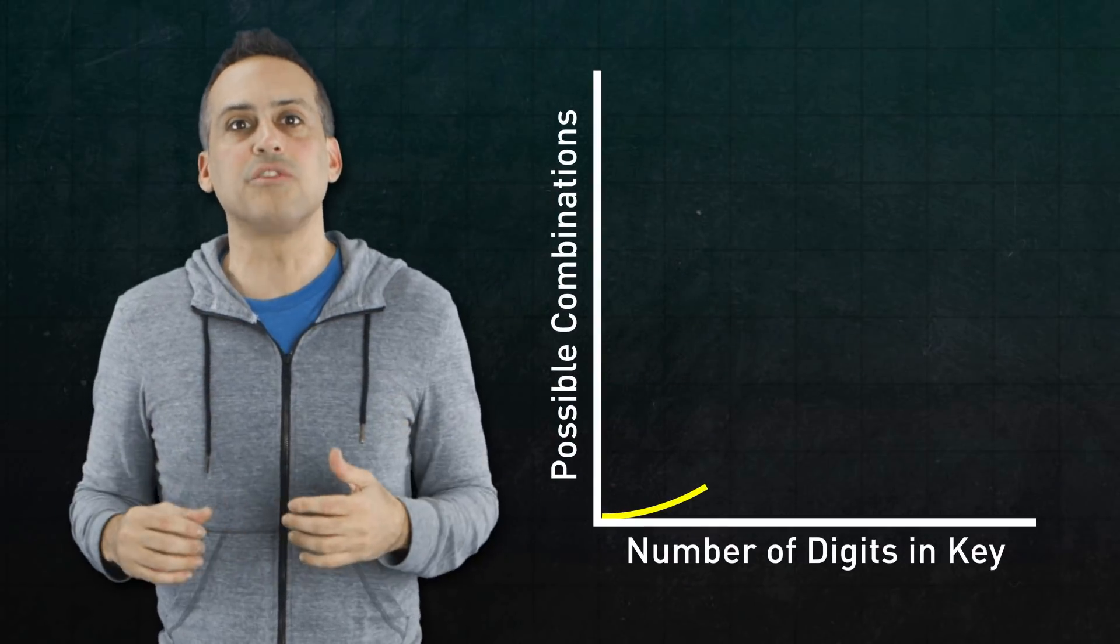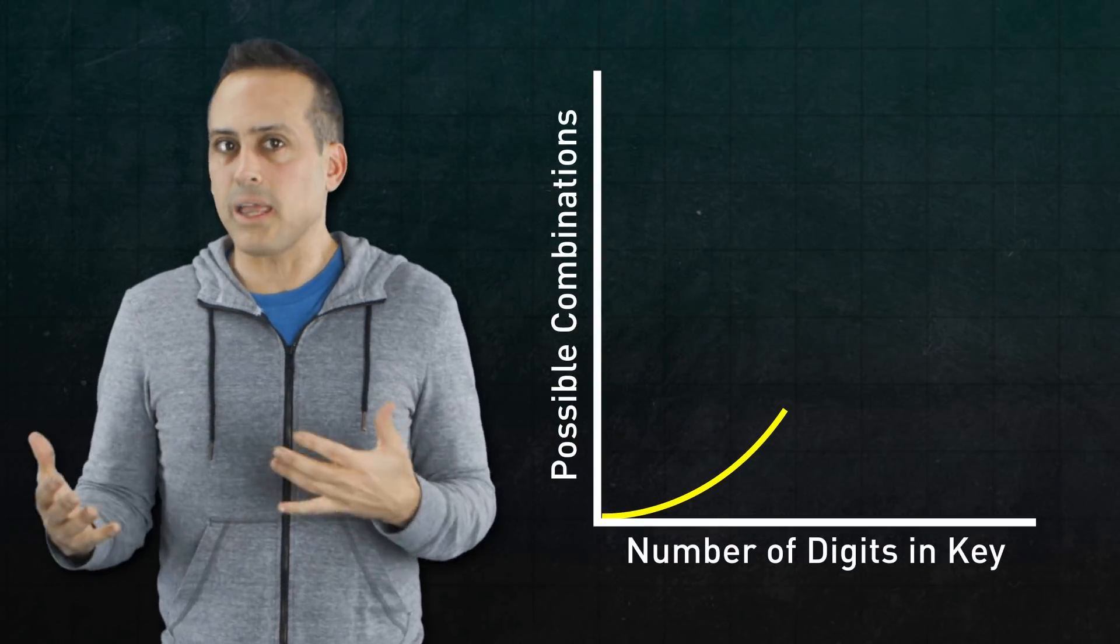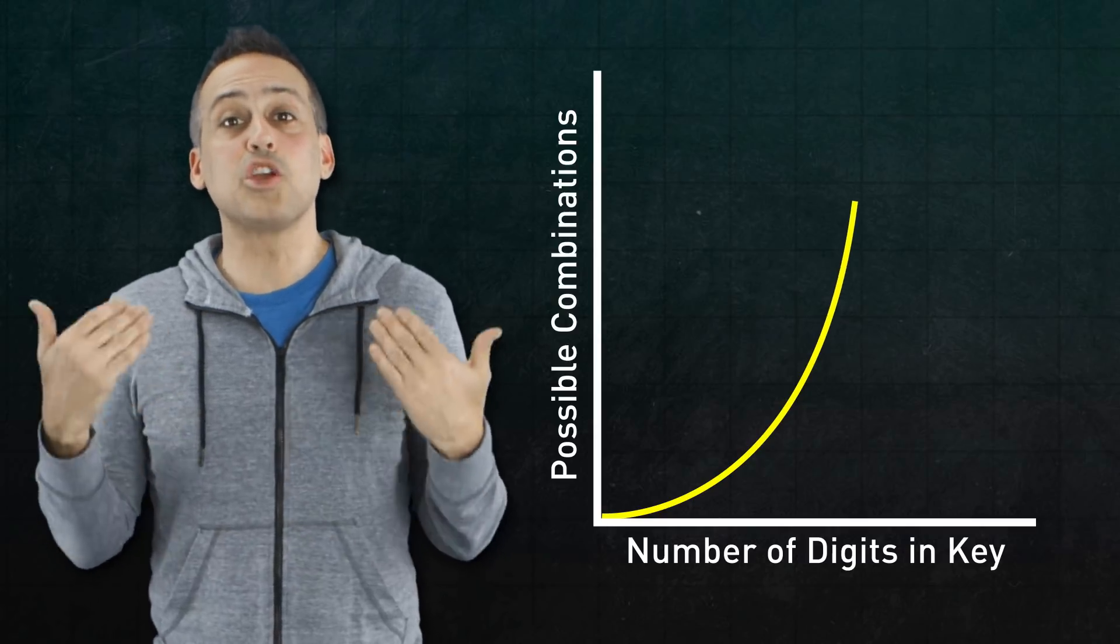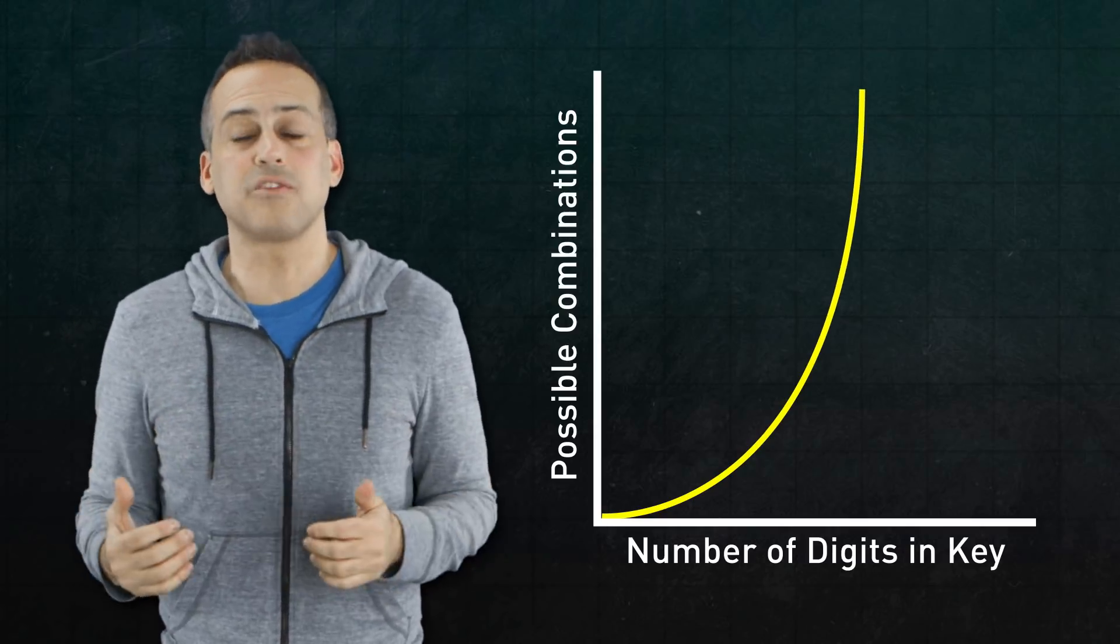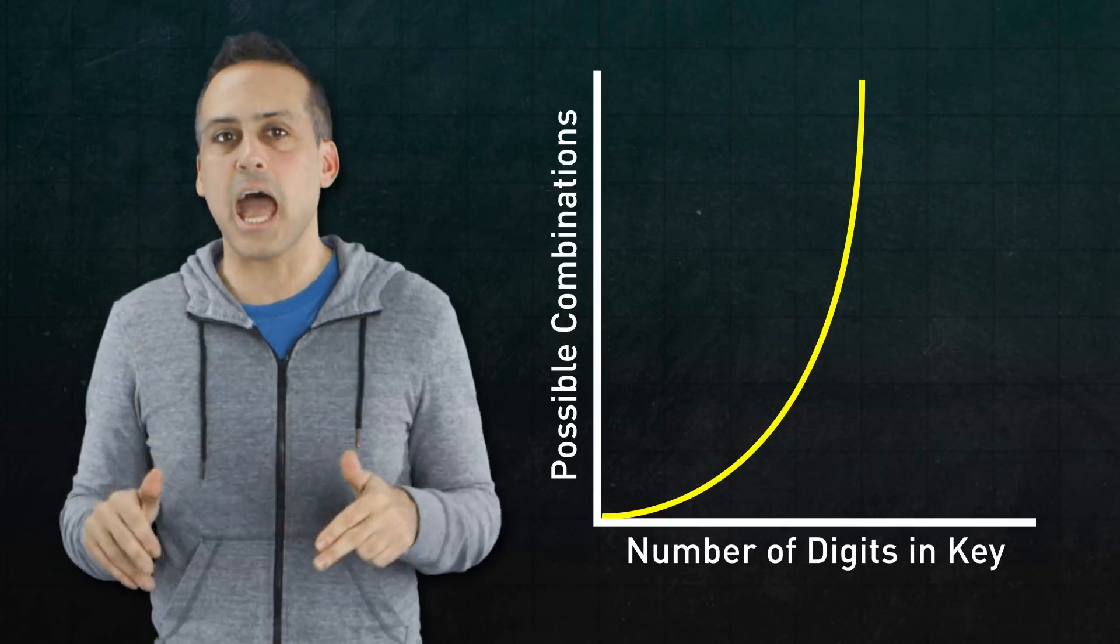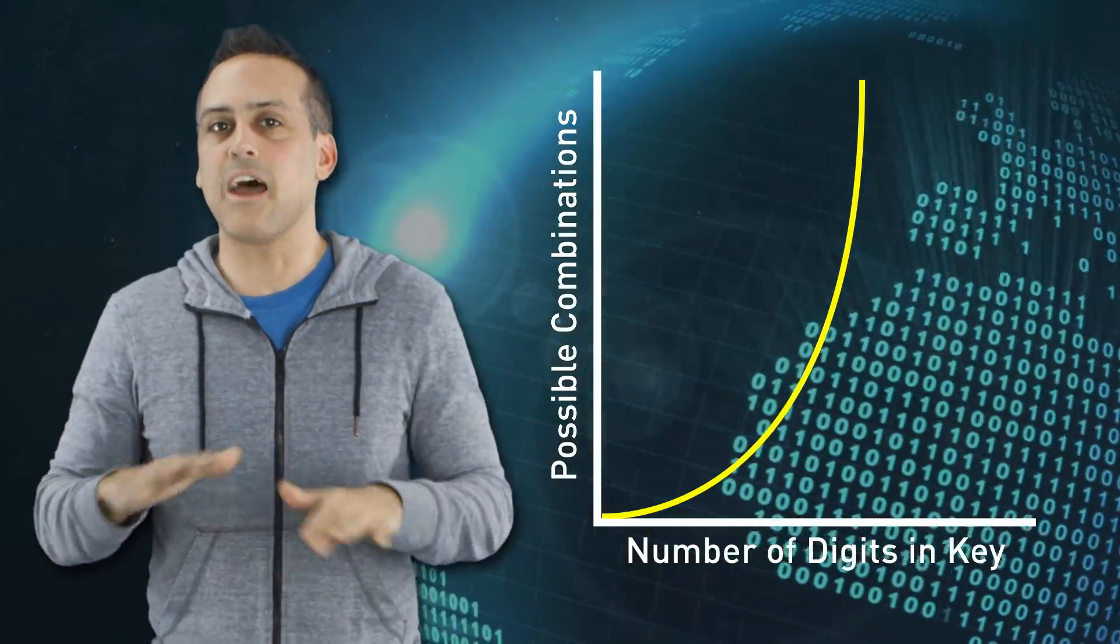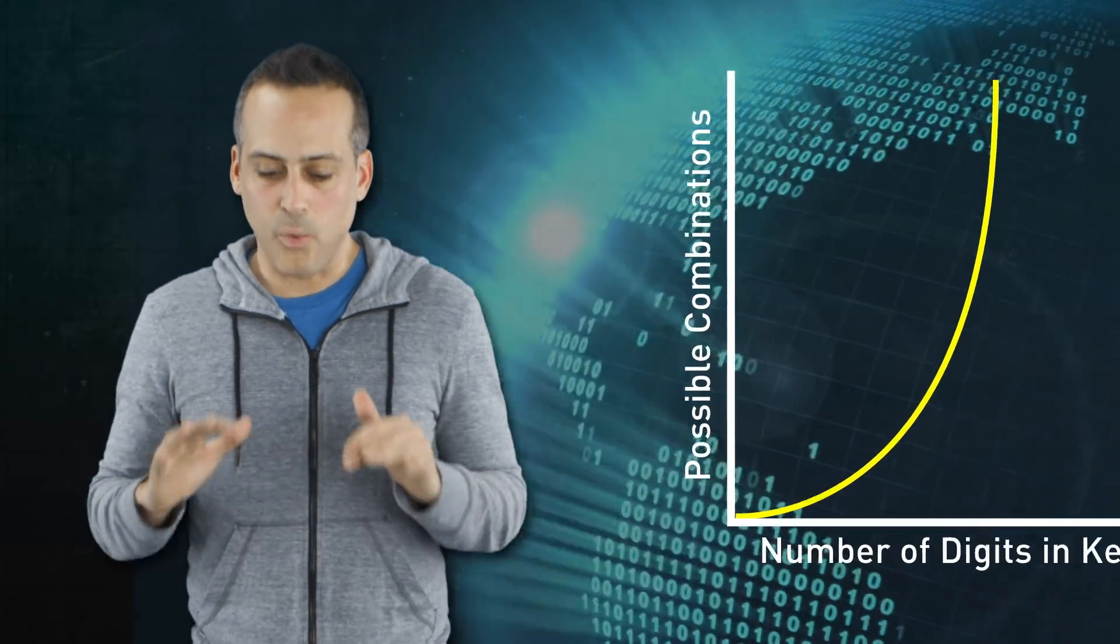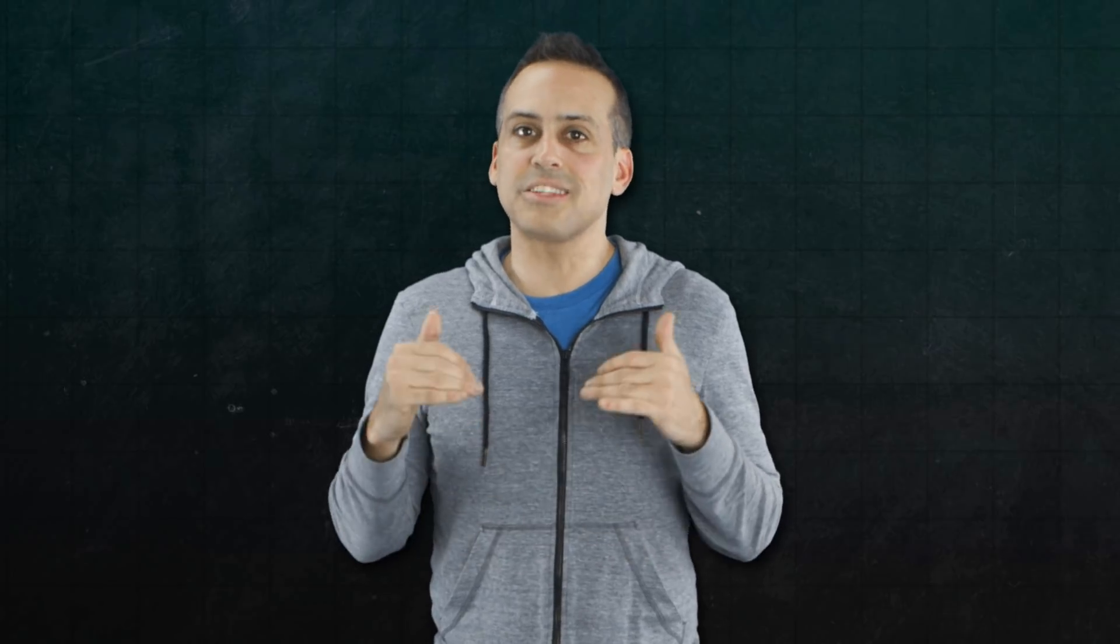And unfortunately for Eve, the number of possibilities she has to try grows exponentially with the number of digits in the key. So pick a key with enough digits, and Eve would need many times the age of the universe to have a reasonable chance of guessing correctly. And that's even if she had every computer that's ever existed working together on only that problem. Granted, people do sometimes devise clever attacks against symmetric encryption schemes. But these attacks typically exploit flaws in implementation rather than in the protocol itself.